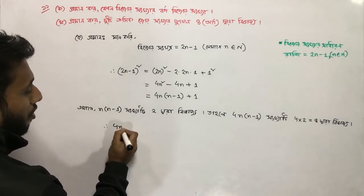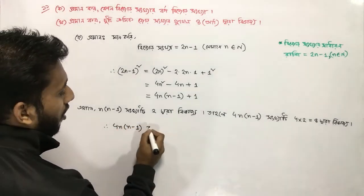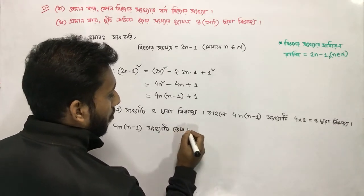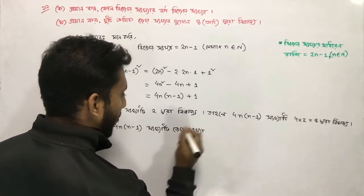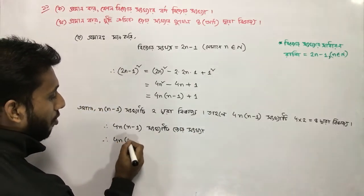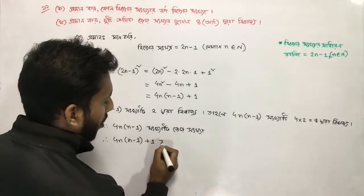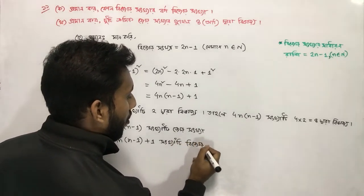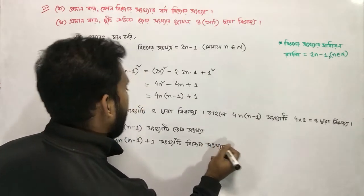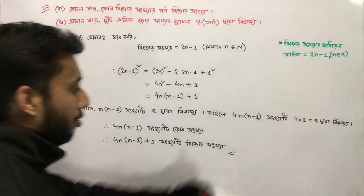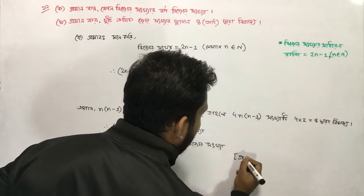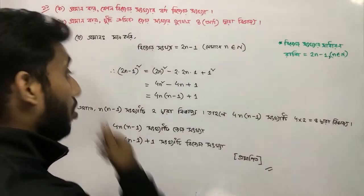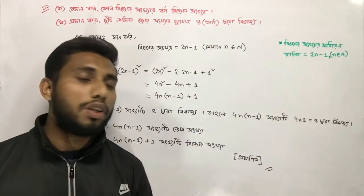n into n minus 1, 2, 3, 4. n into n minus 1, 1, 2, 3, 4. n into n minus 1 plus 1. 2, 2, 3, 4, n into n minus 1, plus 1.